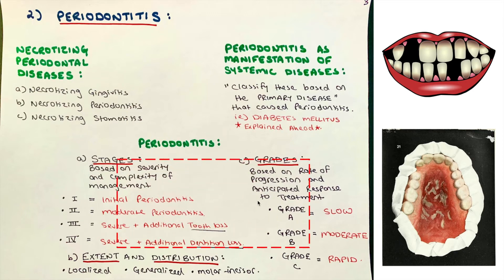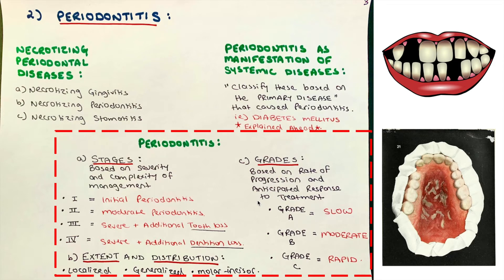Periodontitis itself is the most important part of the classification because this is how we will clinically diagnose the patient. Remember, stages are based on severity and complexity of management. There are four stages: Stage 1 (initial), Stage 2 (moderate), Stage 3 (severe with tooth loss), and Stage 4 (severe with additional dentition loss). We also have extent and distribution: localized, generalized, and molar-incisor pattern.